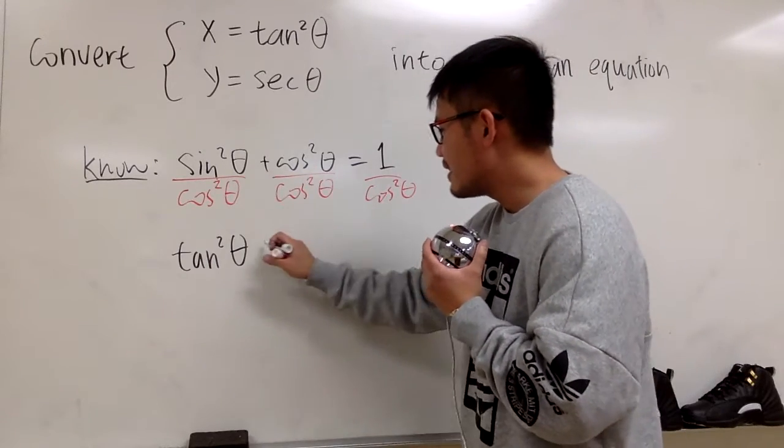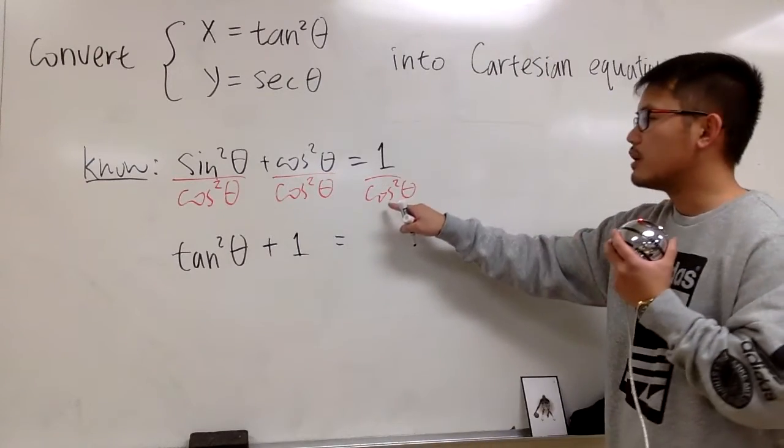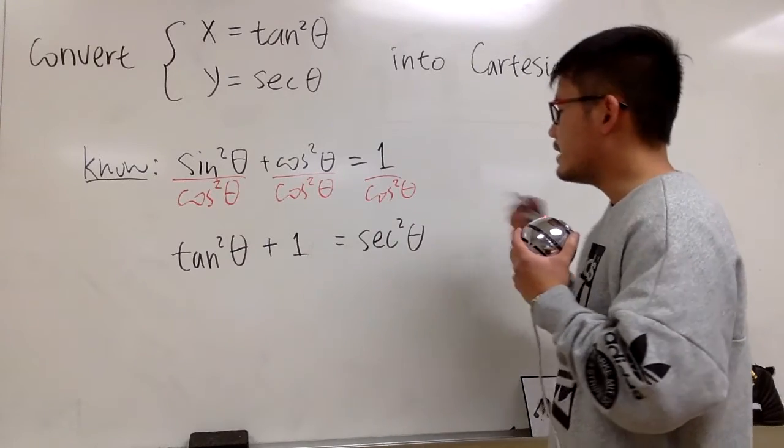Right here, this is going to be plus 1, and then this is going to give us 1 over cosine squared theta, namely secant squared theta.